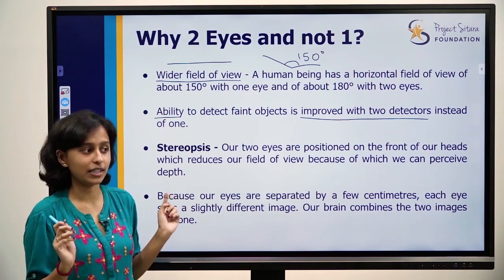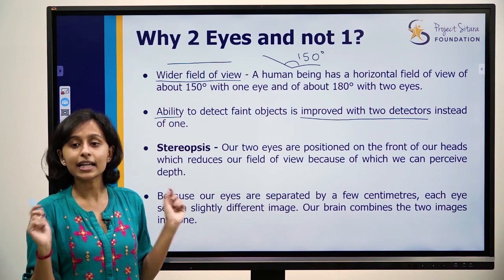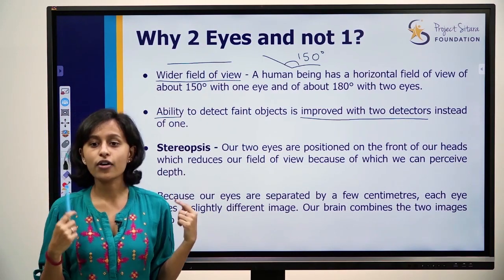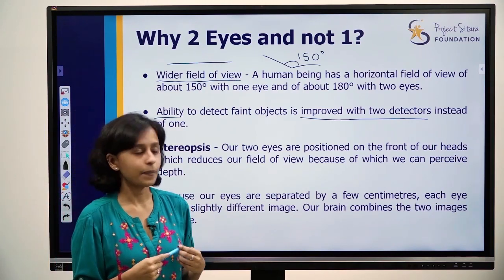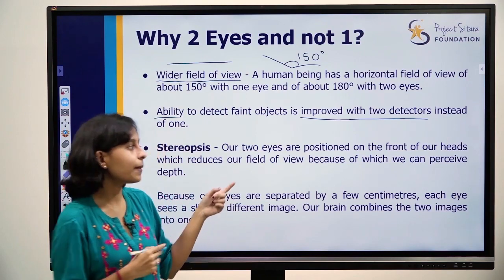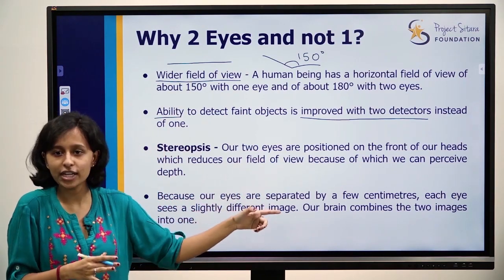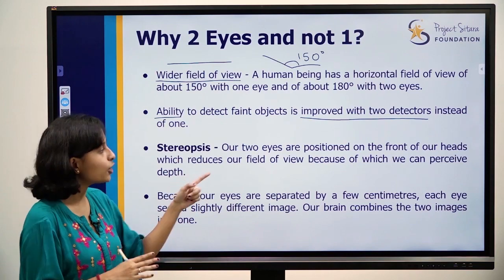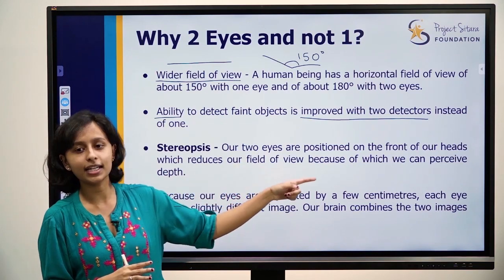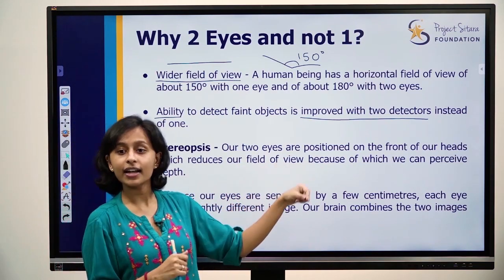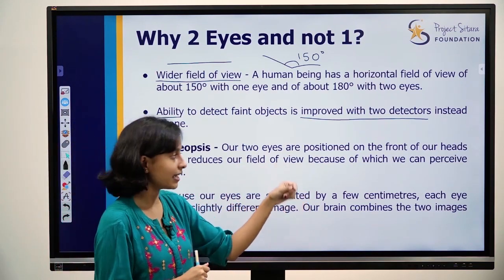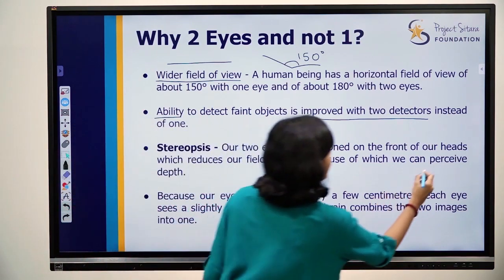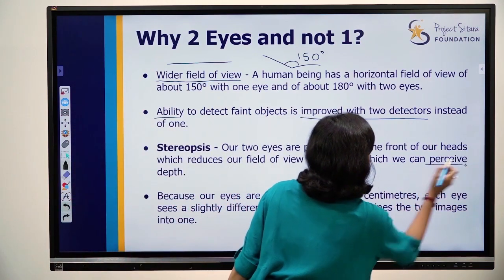For horses, the field of view is much wider. But for us humans, the field of view is not as wide. Our field of view is 180 degrees. Why is it 180 degrees? There is another reason — so that we can perceive depth.